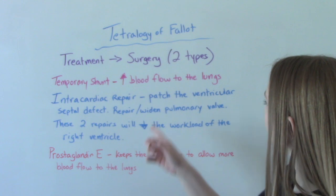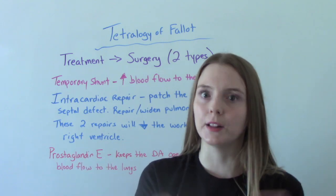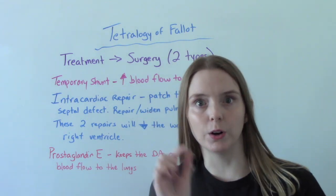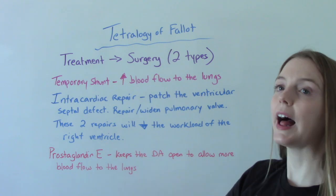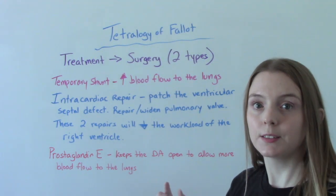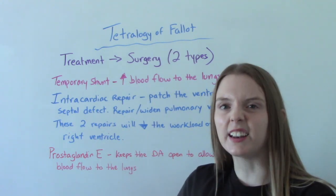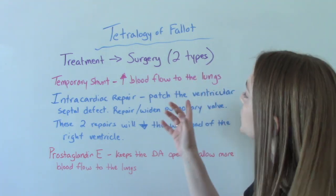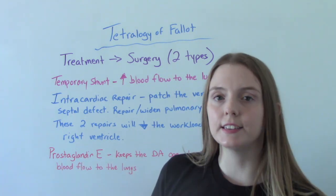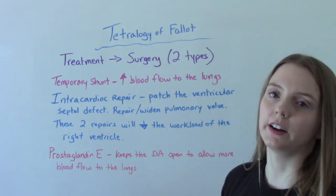What are they going to fix? First, they're going to patch up that hole — the ventricular septal defect — so that blood stops mixing. They need to repair or widen the pulmonary valve, because it's very narrow. These two repairs will help fix the other problems. Once repaired, the workload of the heart will decrease, the right ventricle will stop having to work as hard, it will stop getting bigger and thickening, and therefore it won't get weaker. Sometimes they will also give prostaglandin E, which helps keep the ductus arteriosus open to allow blood flow to the lungs so it becomes more oxygenated.